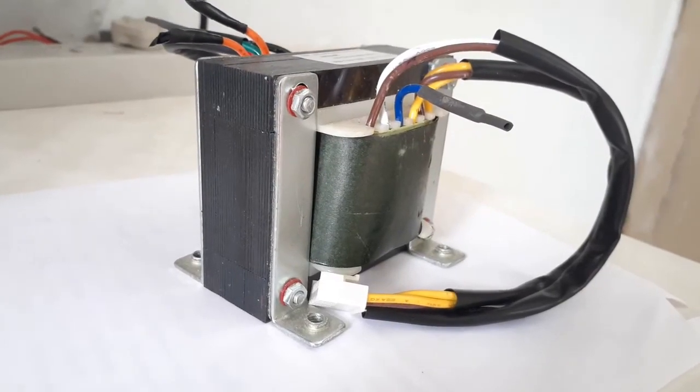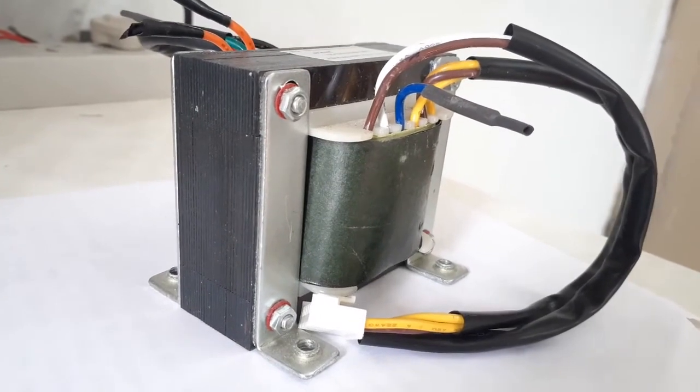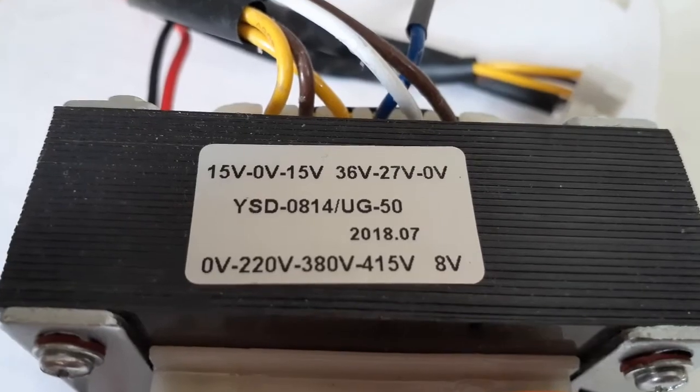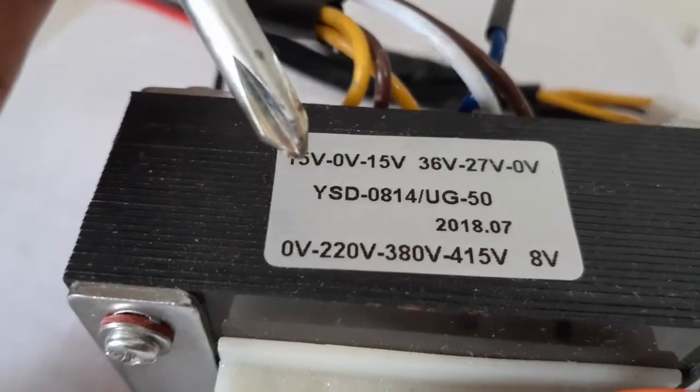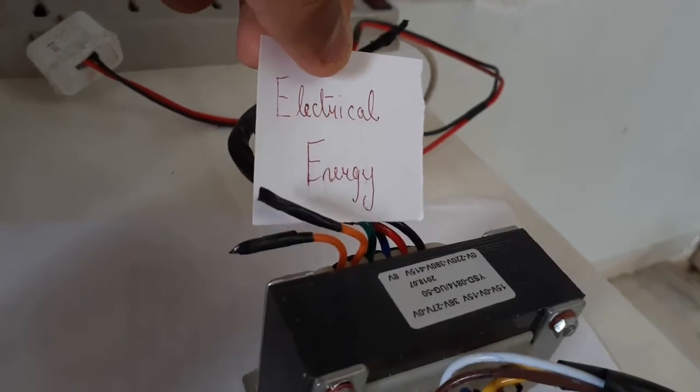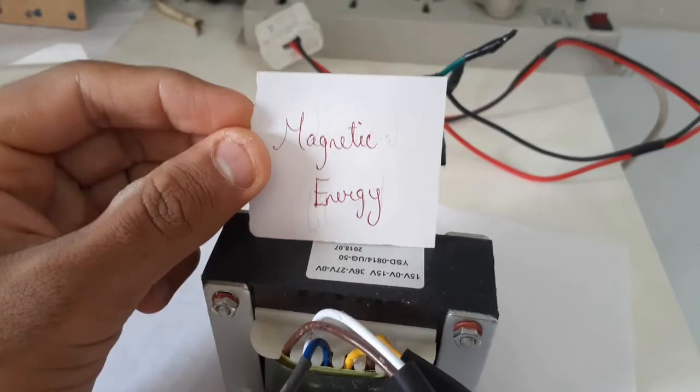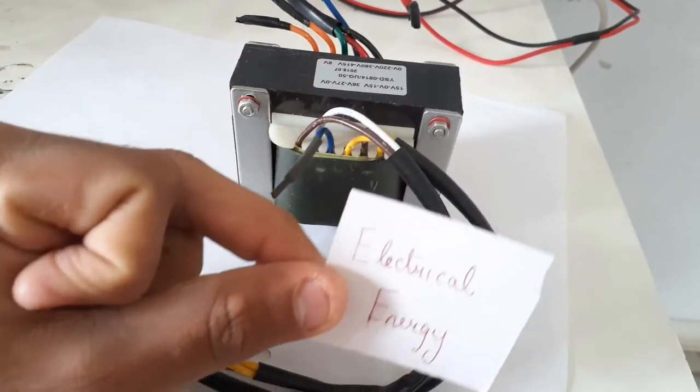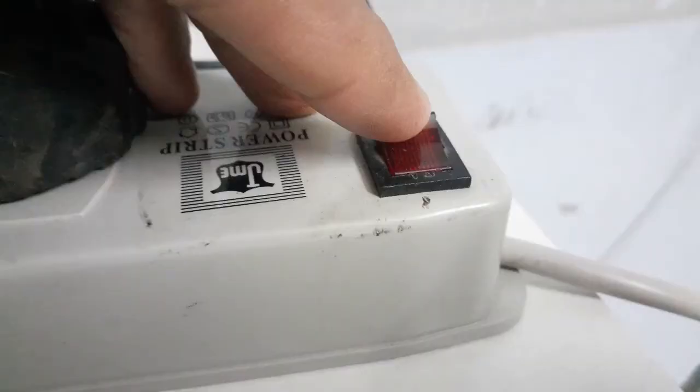Our main focus will be on multi-winding transformers, but we will briefly understand the basics first. Transformers in real life cannot transform themselves as Optimus Prime or Bumblebee does, but transformers are devices that convert electrical energy to magnetic energy or flux, and then back to electrical energy.